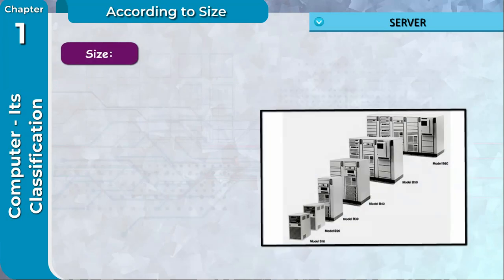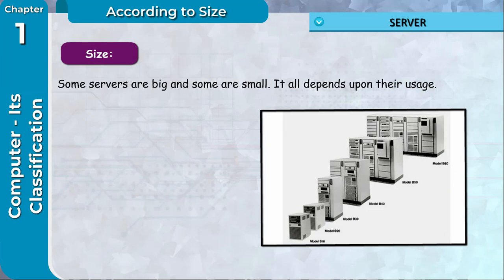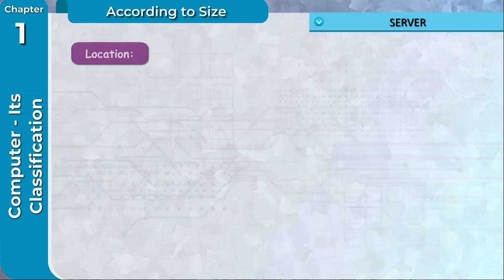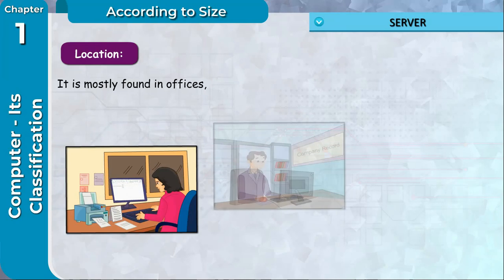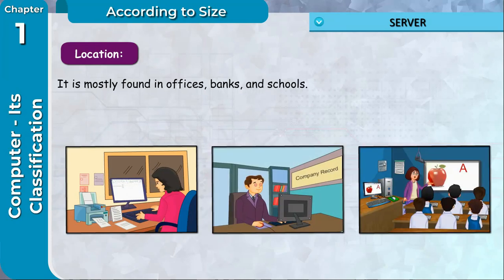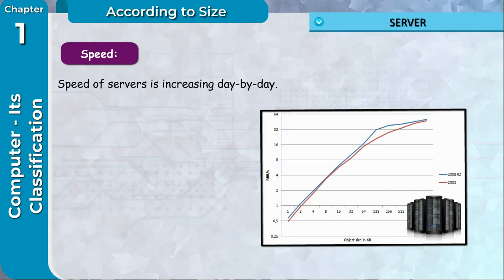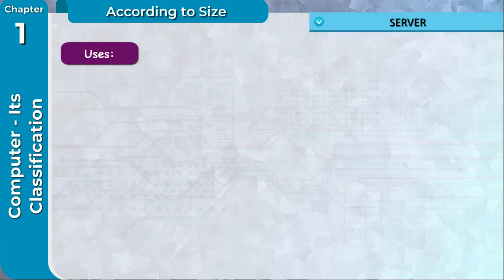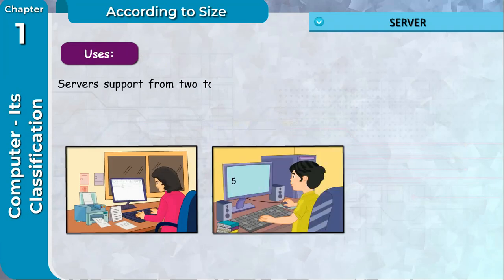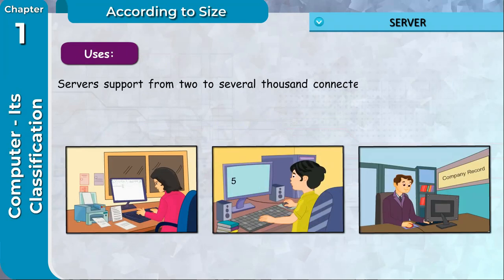Size: Some servers are big and some are small. It all depends upon their usage. Location: It is mostly found in offices, banks, and schools. Speed: Speed of servers is increasing day by day. Uses: Servers support from two to several thousand connected computers at the same time.